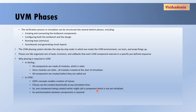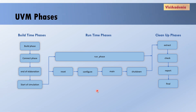Through phases, what we will do is first we will only create all the components, and when all the components are created, then only we will move to the next phase, which is called the connect phase, where we can connect all the components. Similarly, it can move to further phases. So UVM has divided the UVM phases into three categories: first is build time phases, second is runtime phases, and third is cleanup phases.